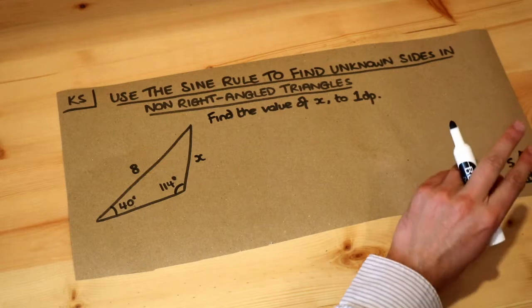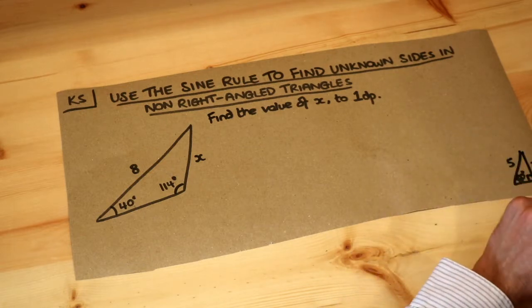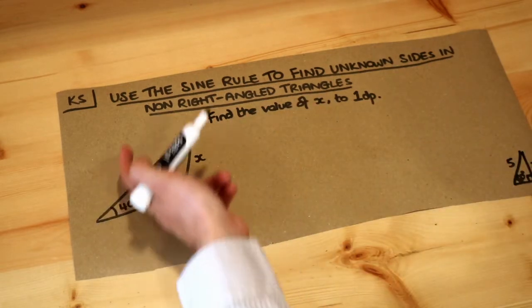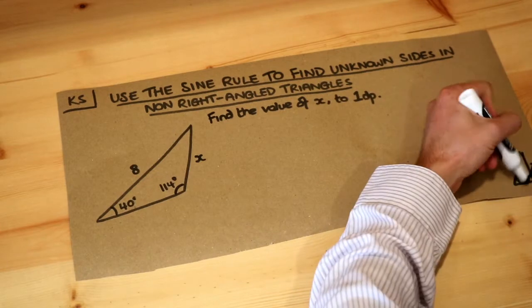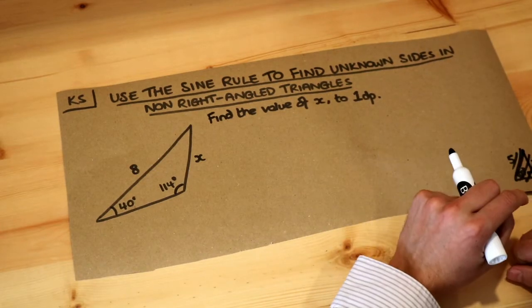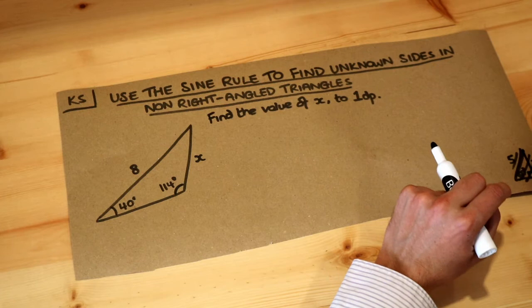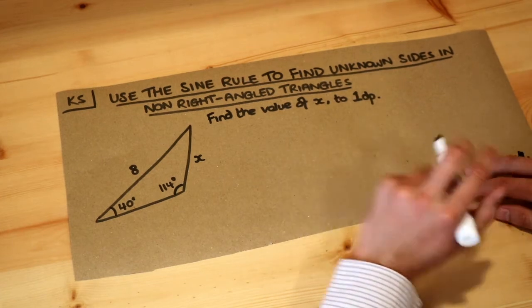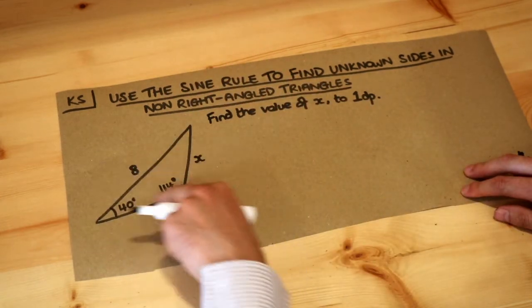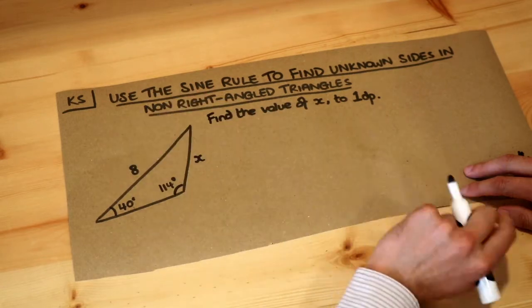However, SOHCAHTOA is only applicable to right-angled triangles. So what do we do if we have a non-right-angled triangle? We have separate formulae for this. There's one called the sine rule. Let me write the sine rule first, and then we'll see how we can apply it to this triangle.